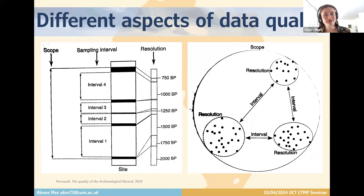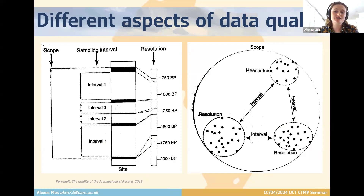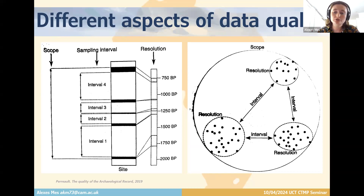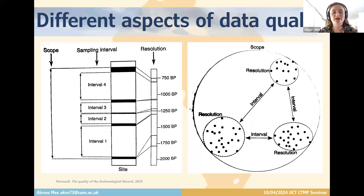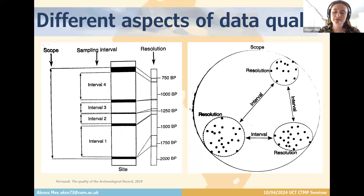Some terminology to describe the different aspects of data quality: there are four properties of analytical units. Scope is the total amount of time and space encompassed in a dataset — the spatial and temporal width of the observation window. Sampling interval is the interval of time and space between each analytical unit. Resolution is the amount of time and space represented within each analytical unit, or the extent of time and space averaging. Trend refers to the intensity of the force as you go back in time from the youngest to the oldest proportion of the archaeological record.